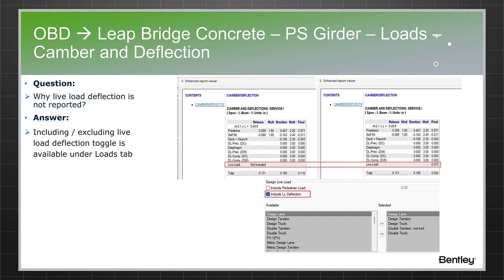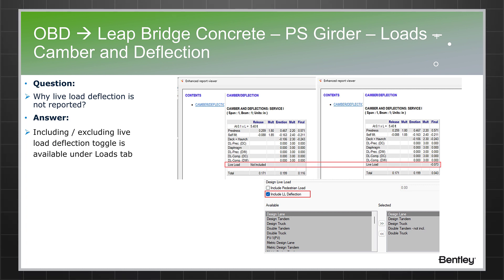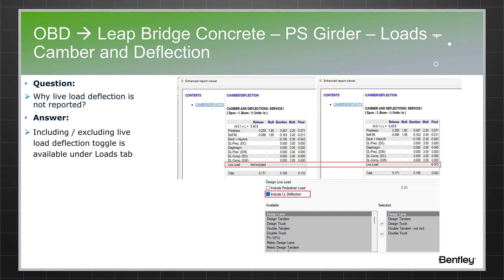Regarding camber and deflection values: the program reports deflection and camber for dead load and diaphragm self-weight, but sometimes live load deflection values are not shown. This is because live load deflection has a separate option. If the user checks 'Include Live Load Deflection' in the Loads tab, the program will show live load deflection in the camber and deflection report. If unchecked, only dead load deflection and camber values will appear.